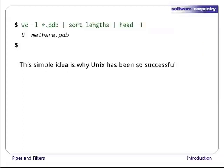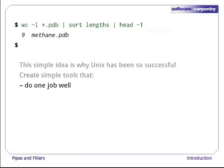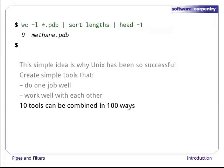This simple idea is why Unix has been so successful. Instead of creating enormous programs that try to do many different things, Unix programmers focus on creating lots of simple tools that each do one job well and work well with each other. Ten such tools can be combined in a hundred ways, and that's only looking at pairings. When we start to look at pipes with multiple stages, the possibilities are almost endless.